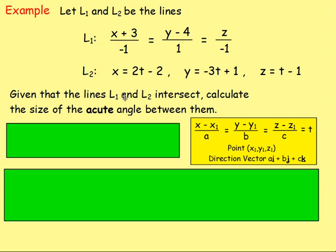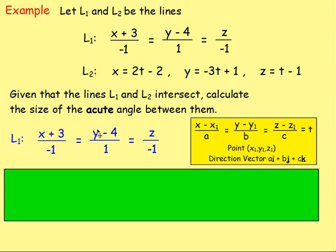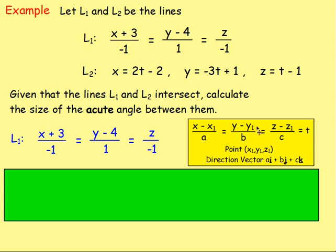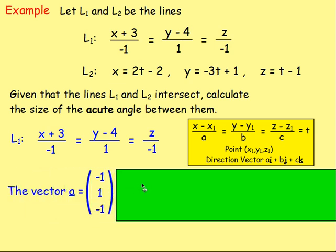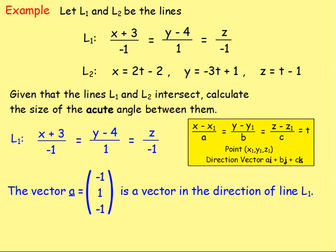Given that lines L1 and L2 intersect, calculate the size of the acute angle between them. For line one, we have (x + 3) / −1 = (y − 4) / 1 = z / −1. In symmetric form we have (x − x₁) / a = (y − y₁) / b = (z − z₁) / c, where the denominators a, b, c are the components of the direction vector. So here, the denominators are −1, 1, and −1, meaning vector A = (−1, 1, −1), which is the direction vector of line L1.